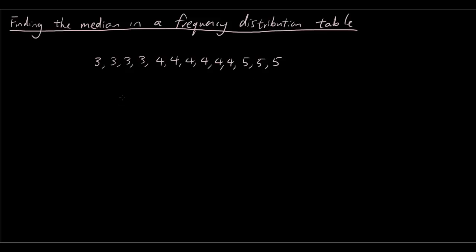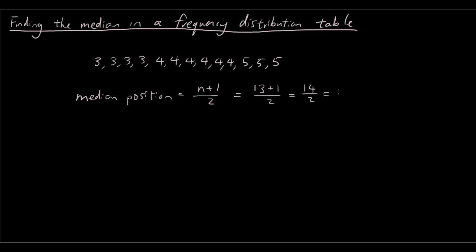So if we were going to find the median, we know the median position is n plus 1 over 2. And we can see that there are 13 numbers. So 13 plus 1 over 2, which is 14 over 2, which is 7.